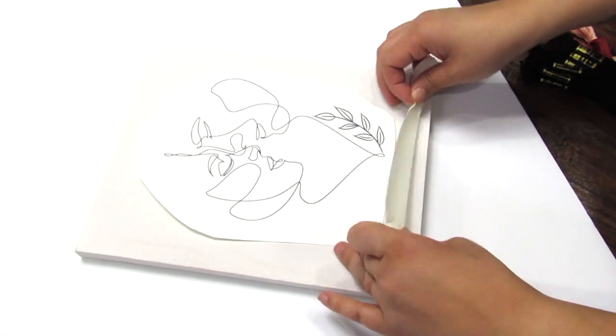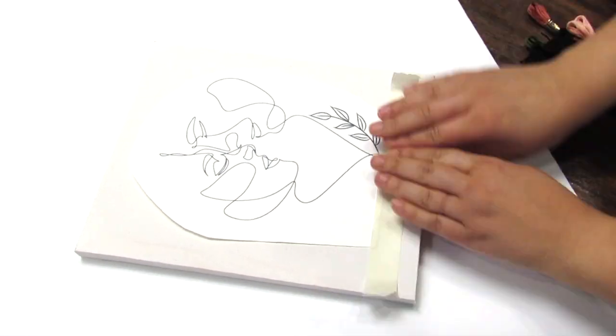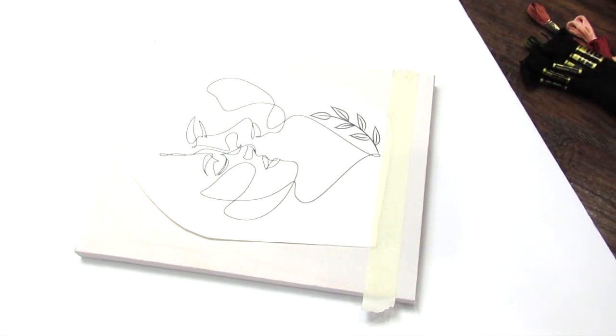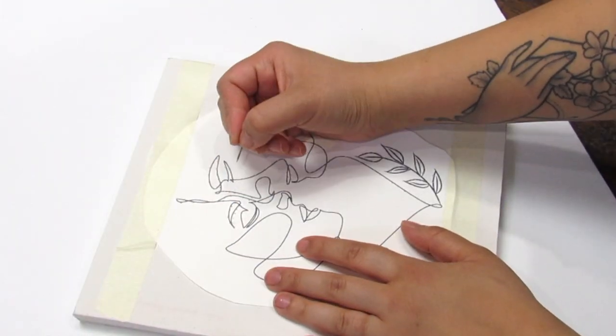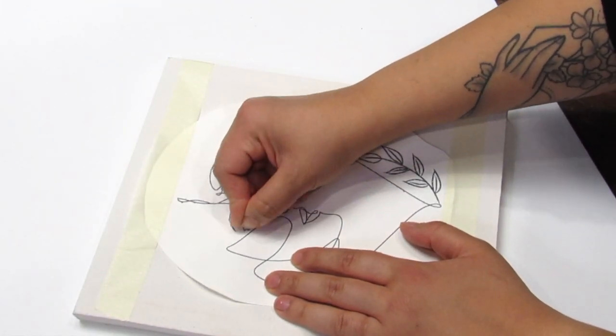This is really important. That way when you trace with the thumbtack or needle, whatever you prefer, everything stays in place. This is crucial. You don't want to miss this step. Otherwise, your image is just going to be wonky.